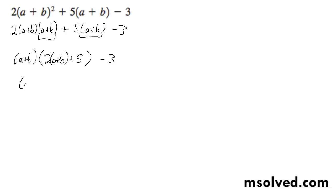So (a + b) times 2a + 2b + 5, quantity minus 3.